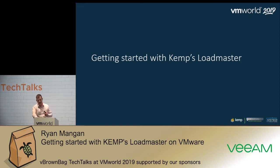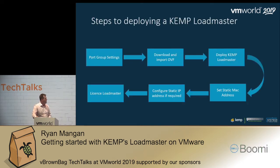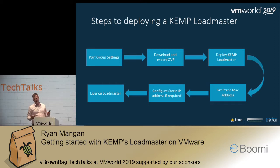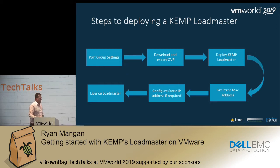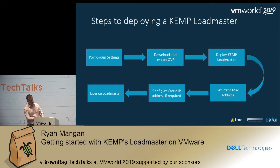In simple terms, we're going to run through getting started with Kemp, deploying in VMware, and cover the key prerequisites. First, on VMware, you need to be aware of the port group settings — you must configure these before doing anything with the Kemp Load Master. Second, deploy and import the OVF file. Third, deploy and license the load balancer. Fourth, configure either DHCP or a static IP address. Finally, set a static MAC address so your license doesn't fail when the VM migrates between hosts.